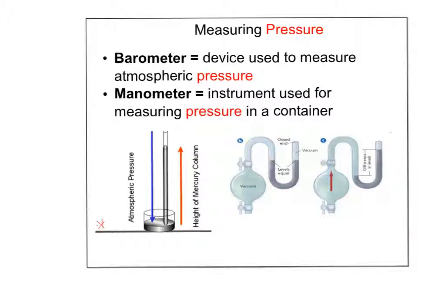Two devices measure pressure. A barometer, used at weather stations, has a plate of mercury and a tube — atmospheric pressure pushes down on the surface, causing mercury to rise. The higher the mercury, the higher the pressure. A manometer compares two gases using mercury levels in a U-tube. If the levels are equal, pressures are equal; if one gas pushes harder, we measure the difference to find the unknown pressure.